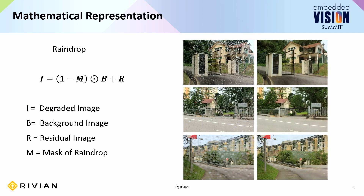I'll first introduce a mathematical description of how conventionally people were trying to solve different kinds of weather degradations. The first one being raindrops: given a degraded image I, you can write an equation as (1 - B) times the background image plus the residual image. If you learn different components of this equation, you can reverse engineer or find an inverse mapping to get the non-degraded image out of the degraded image I.